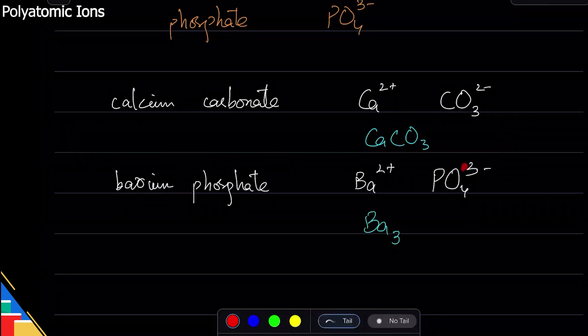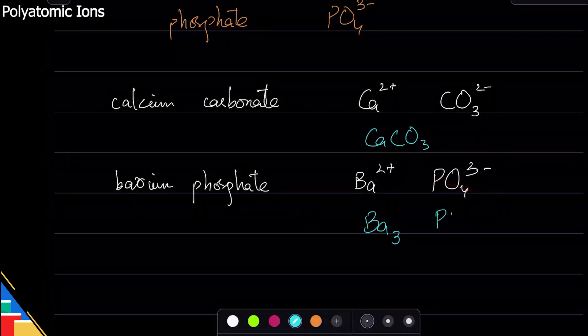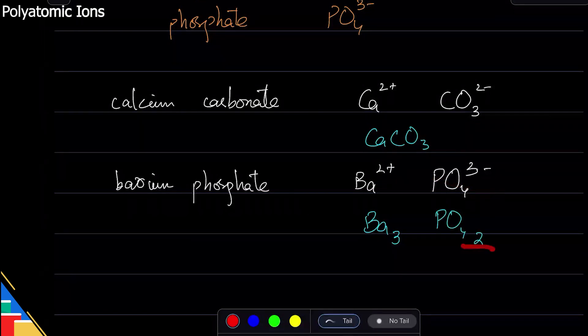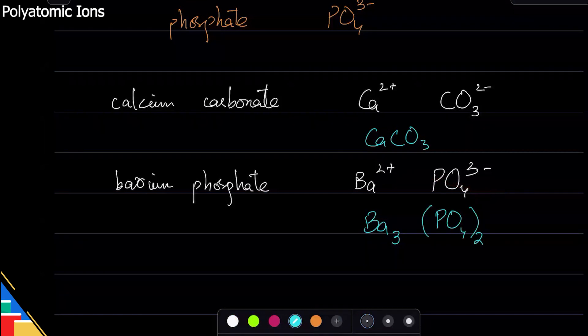So Ba three, and this two has to go here. Now here's the thing - I don't have 42 of them. I need two of phosphate, I need two phosphate. So to mention that I will put brackets. Now I'm saying that I have three barium and two phosphate.